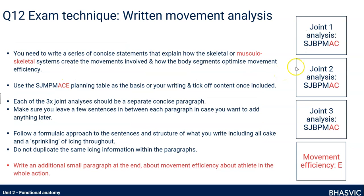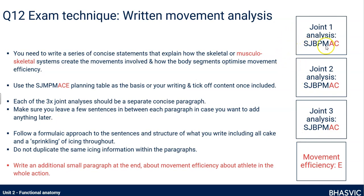I've shown what I was explaining: you write a series of musculoskeletal analyses. For joint one, you do your normal Sexy Justin Bieber Plays Music, then add 'At Concerts' — the muscular actions and contraction type of the agonist — just for that joint. Same with joint two and joint three. We'll ignore the 'E' part for now. I'd encourage you to leave a few lines or the rest of the page between joints, just in case you want to go back and add anything. At the end, once you've done your three joint analyses, write a small additional paragraph on movement efficiency.